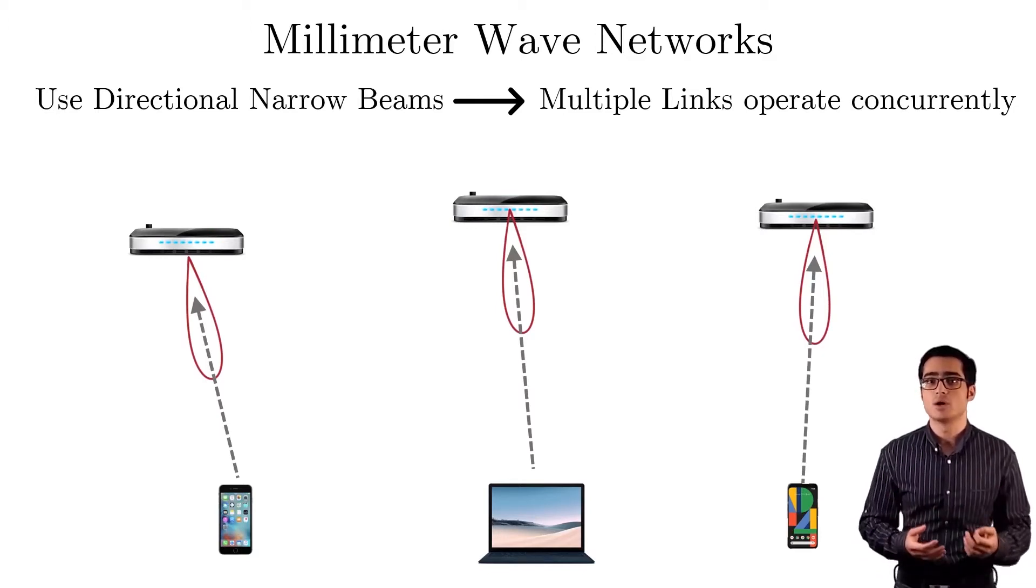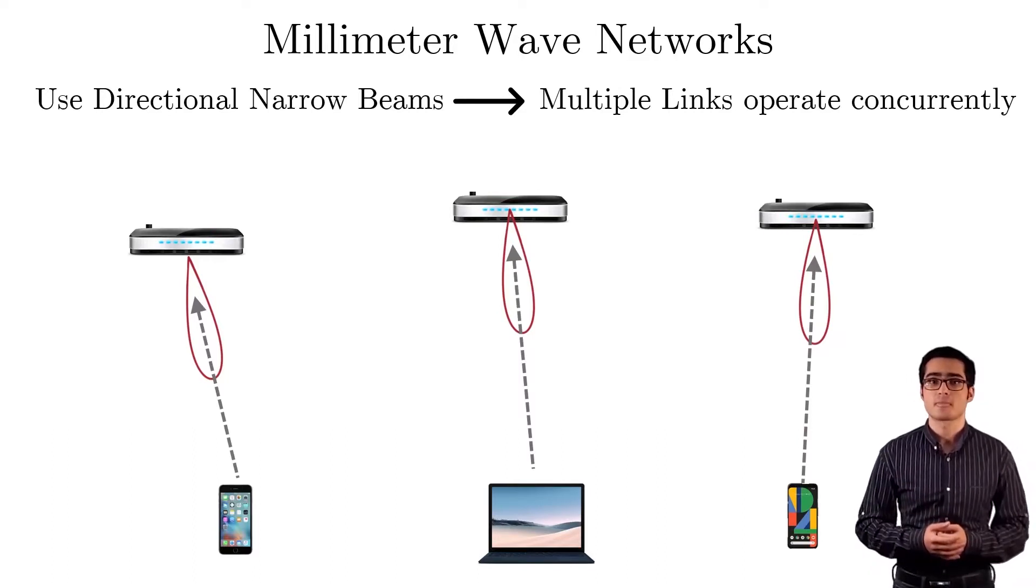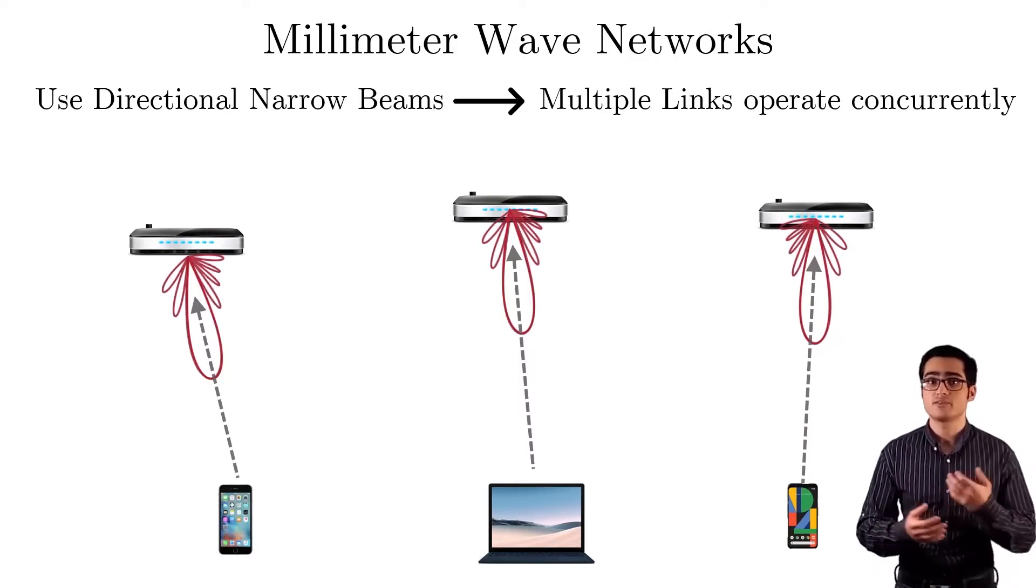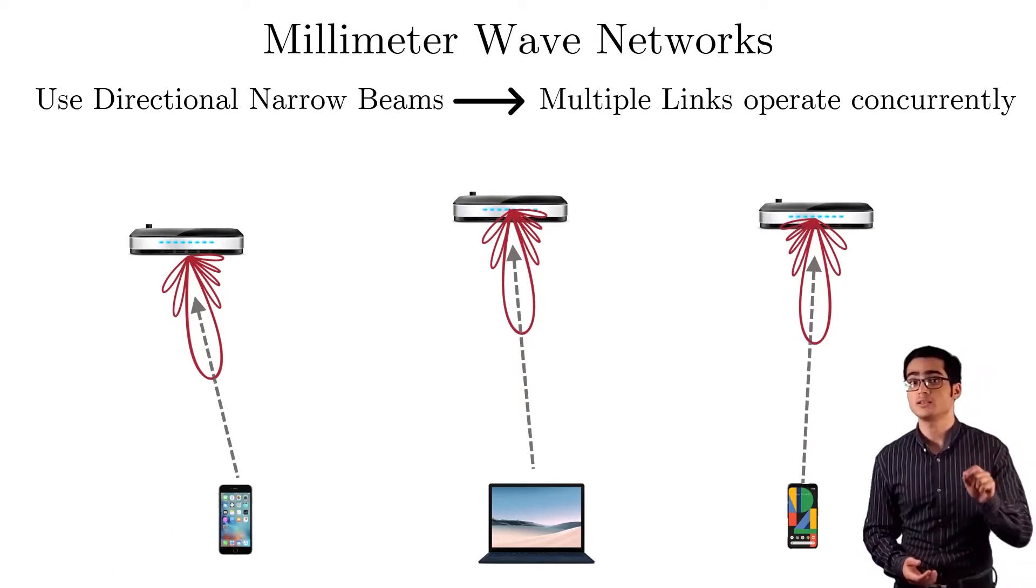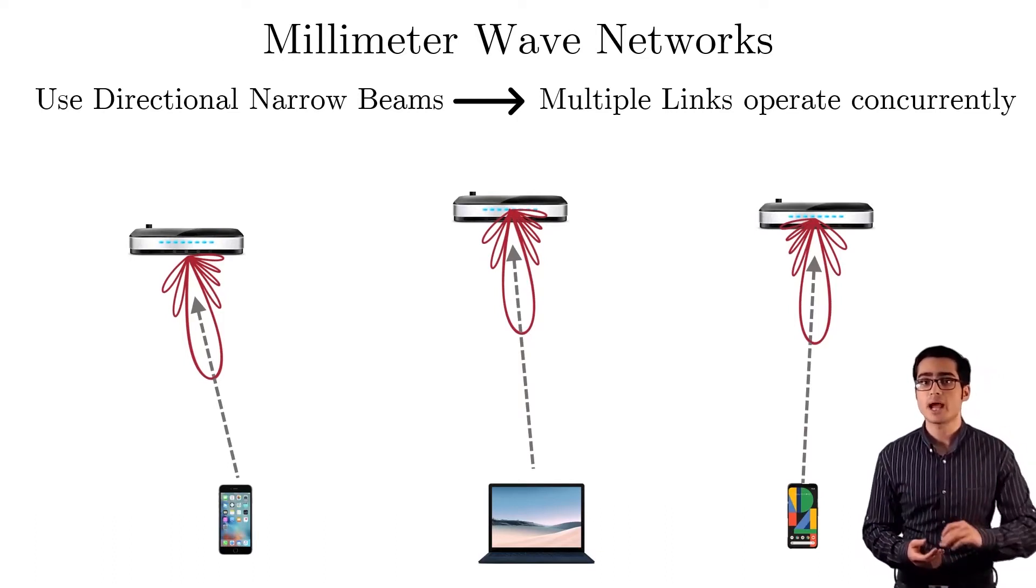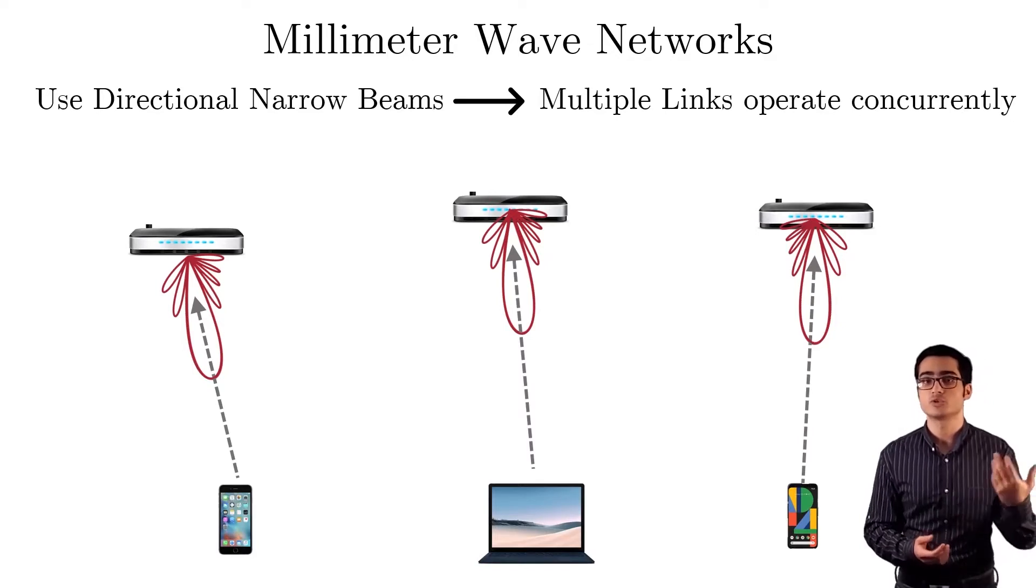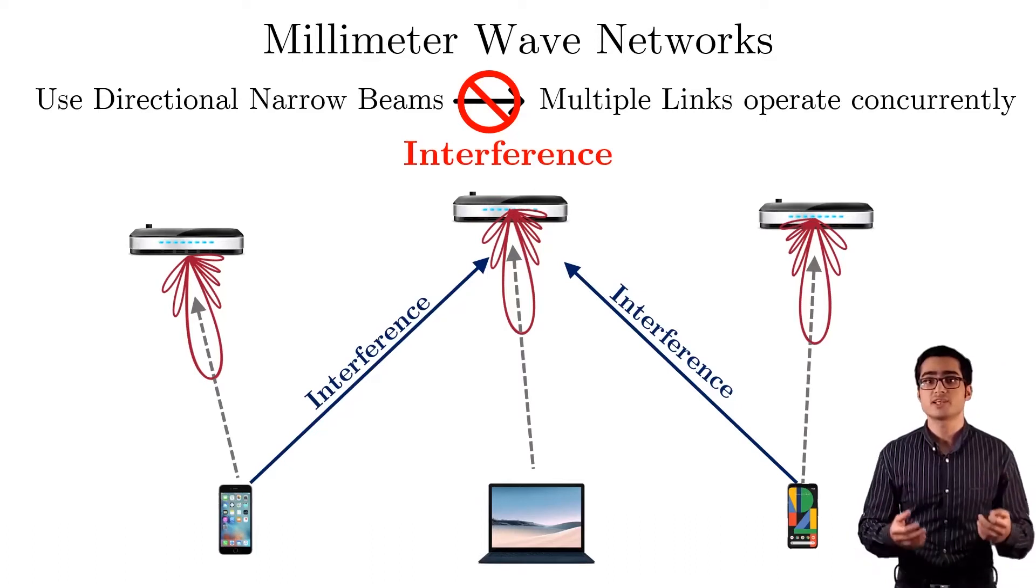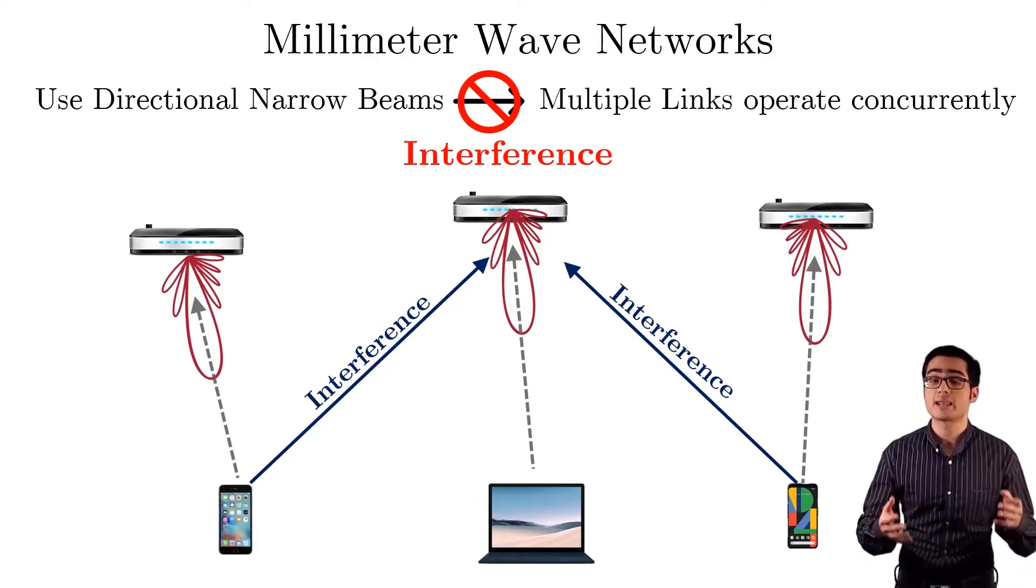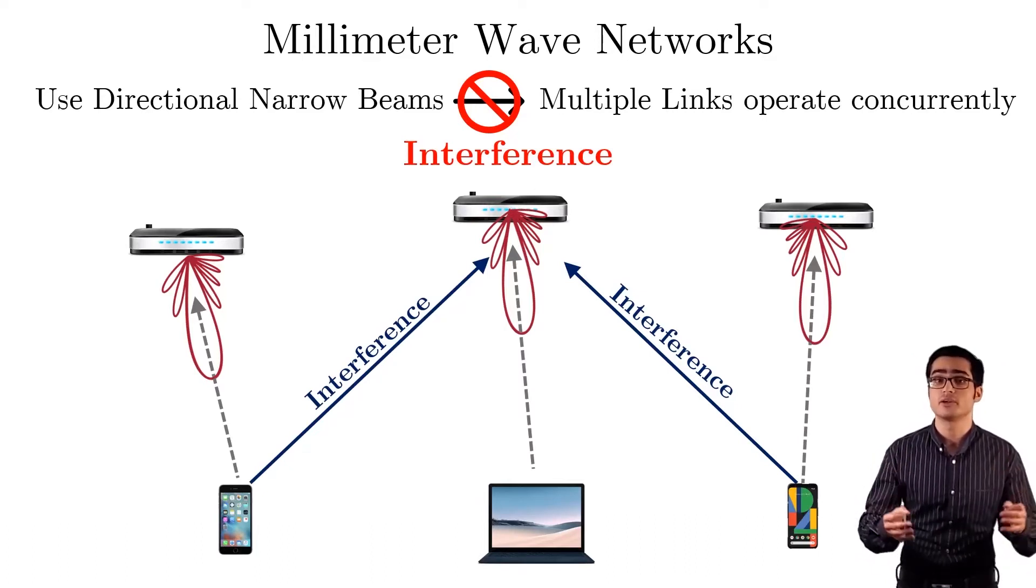In practice, however, these beam patterns are not perfect. In fact, they look something like this, where in addition to the main direction or the main lobe, there are also side lobes in the pattern that allow the power to leak through from other directions and create interference. This interference can significantly reduce the throughput and prevent the links from operating in parallel.